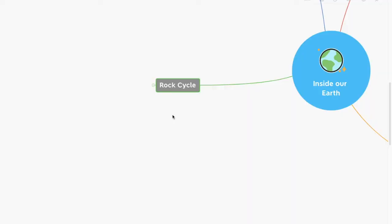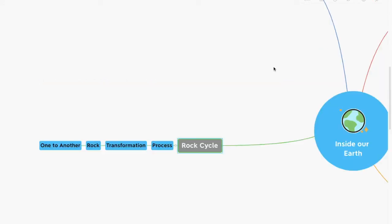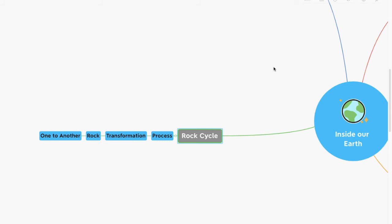If you know any other games which can be played with stones, let me know in the comment box below. Remember that one type of rock can change its form — this process of transformation of rock from one to another is called the rock cycle.